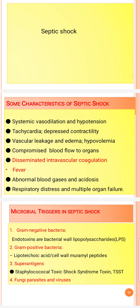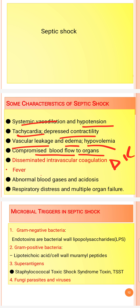Septic shock has specific characteristics: systemic vasodilation, hypotension, tachycardia, depressed contractility, vascular leakage, edema, hypovolemia, compromised blood flow, DIC, fever, abnormal blood gases, acidosis, respiratory distress, and multiple organ failure.